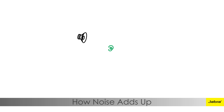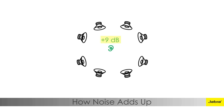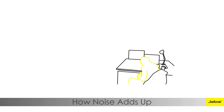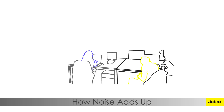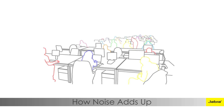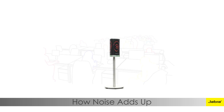Each time the number of sound sources doubles, the noise level increases by three dBs, as can be heard in this demo. However, if it is people talking instead of noise sources, then it is more a case of two plus two equals five — when several people talk at the same time, the noise level continues to increase.